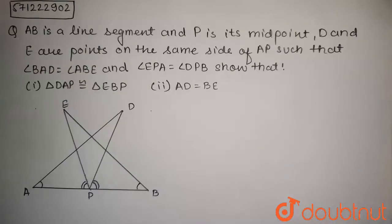The question is, AB is a line segment and P is the midpoint. D and E are points on the same side of AB, such that angle BAD is equal to angle ABE and angle EPA is equal to angle DPB. Show that triangle DAP is congruent to triangle EBP and AD is equal to BE.